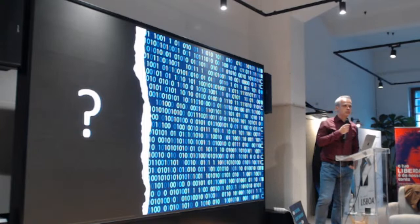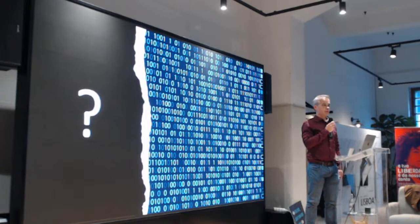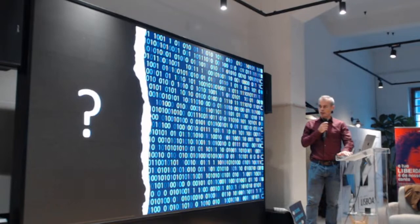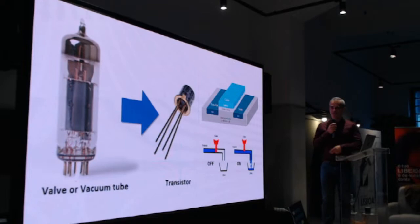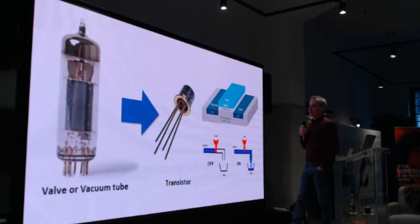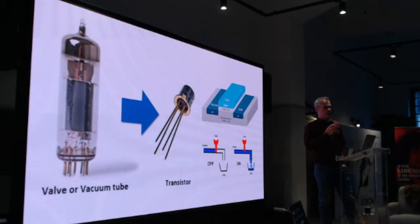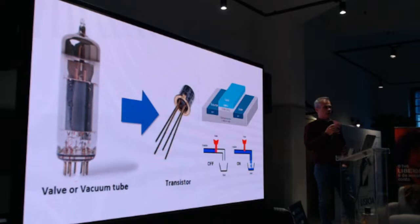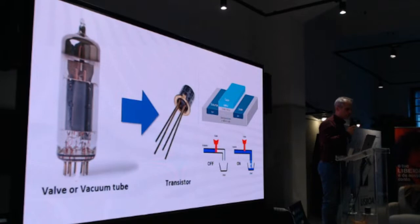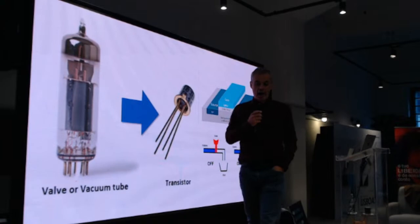What is behind the generations of zeros and ones that provide you the ability to program, make logic operations with the processor, or store information? This has been done for about one century. Everything started with the device on your left-hand side — a valve, also known as a vacuum tube. It was the first device that allowed the creation of zeros and ones, because it has three terminals. You control the current flowing between two terminals, with electrons flying in vacuum, until the mid-20th century.